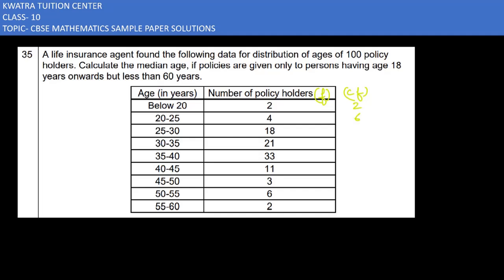Next, I have to add 2 and 4, which is 6. 6 and 18 would be 24. 24 and 21 would be 45. Then 45 and 33 would give you 78. 78 and 11 would give you 89. Then 89 plus 3 would be 92. 92 plus 6 would be 98. 98 plus 2 would be 100.